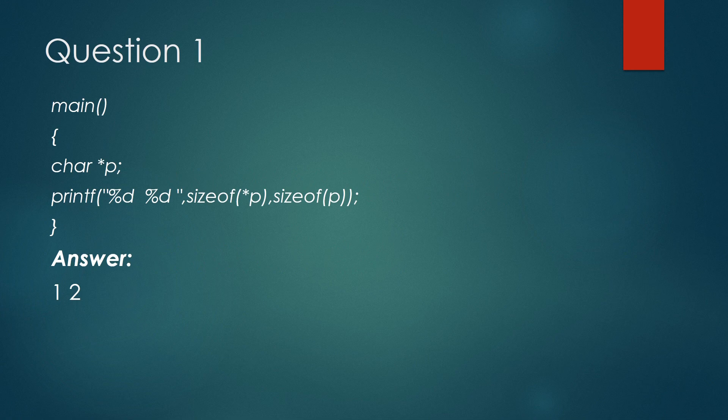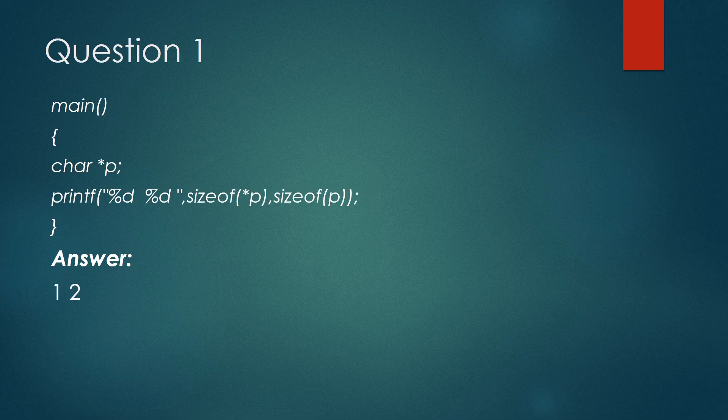What will be the output of the following code? Here there are two statements inside the main function. First one is the character pointer declaration, and the second one is a printf statement. Now, as you can see, inside the printf statement there is sizeof operator. Sizeof operator gives the number of bytes taken by its operand.